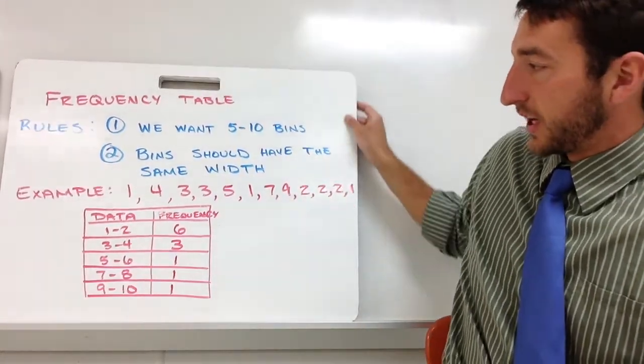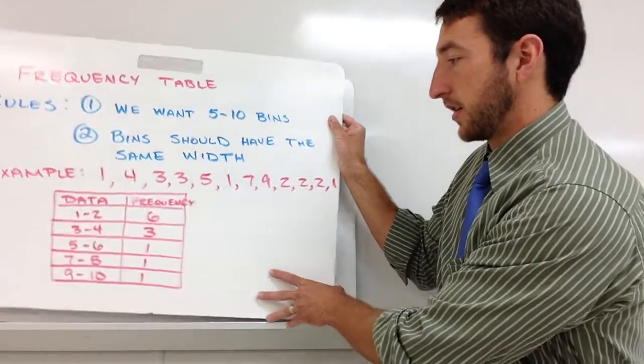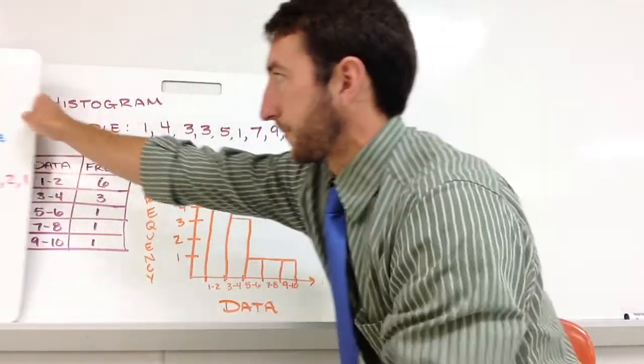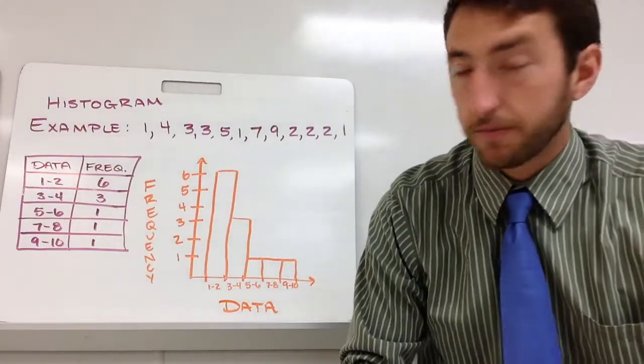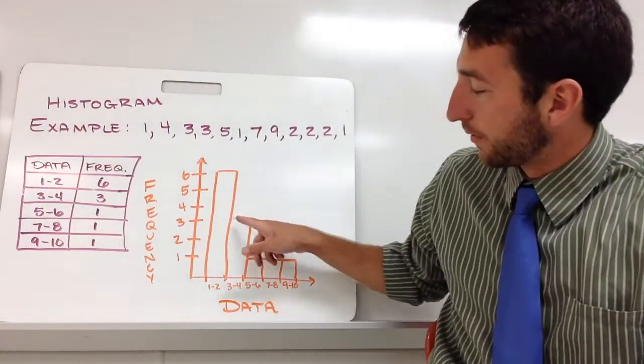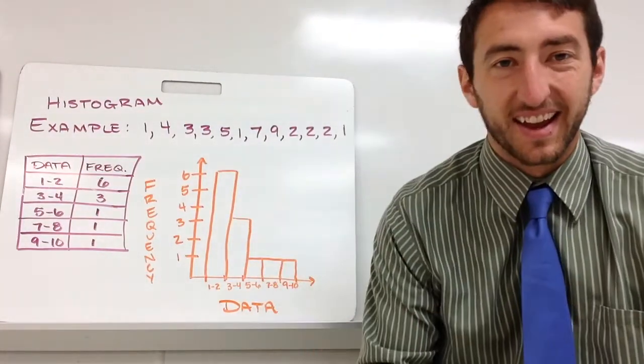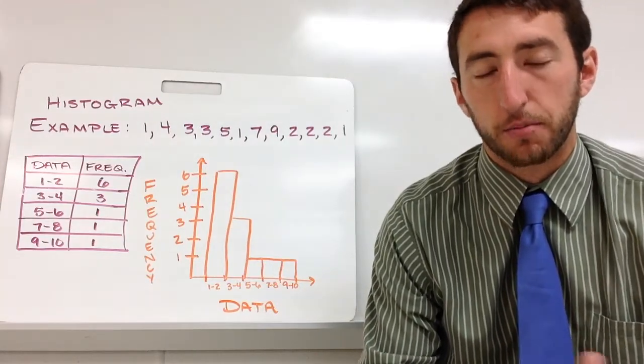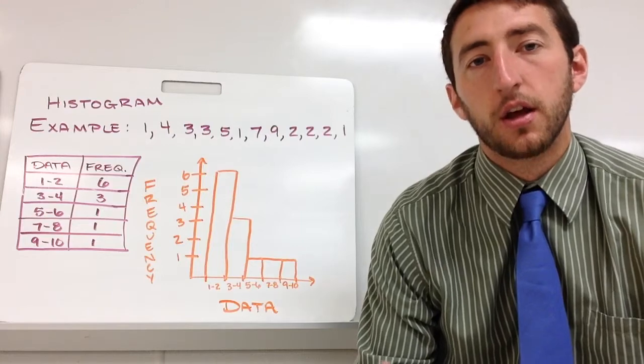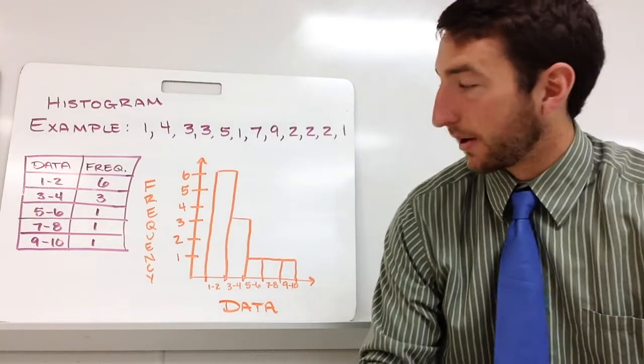And so after we get our frequency table, we can then create our histogram. So our histogram looks a lot like a bar graph, but our bars are going to touch. And we're using quantitative data instead of categorical data. The bar graph goes with categorical data. A histogram goes with quantitative data.